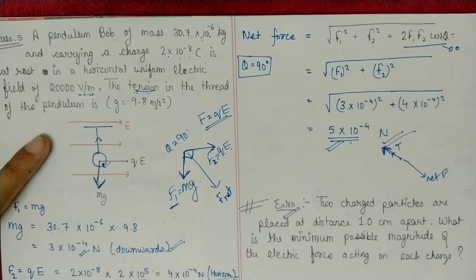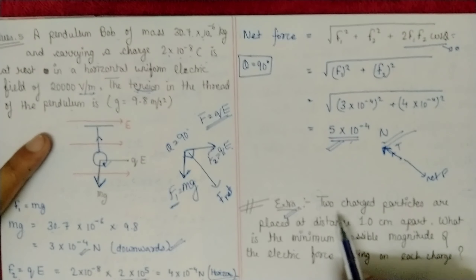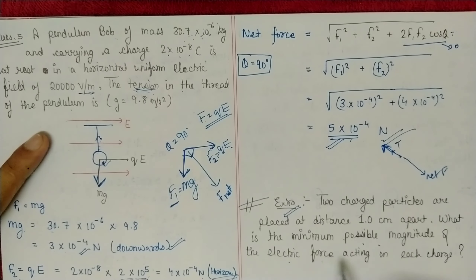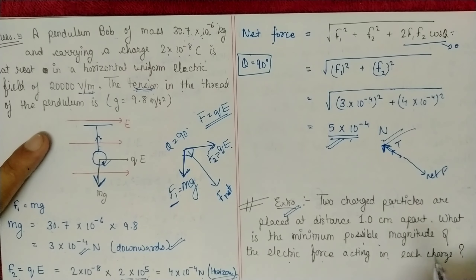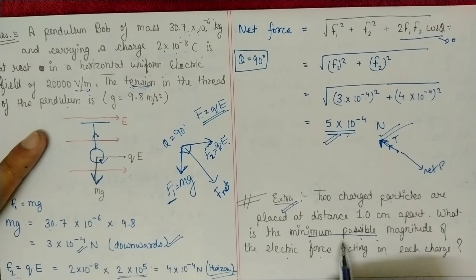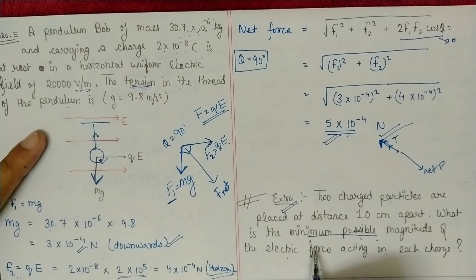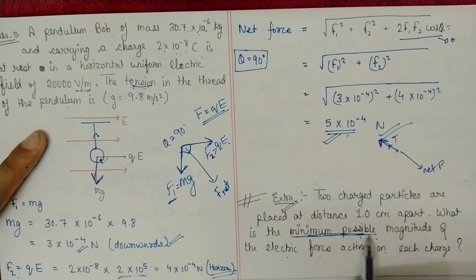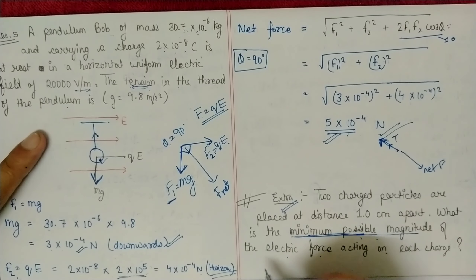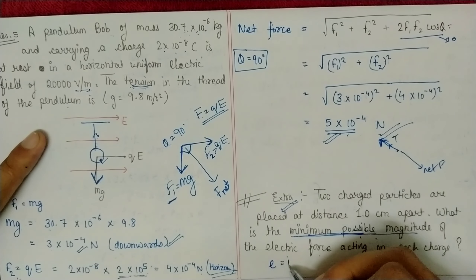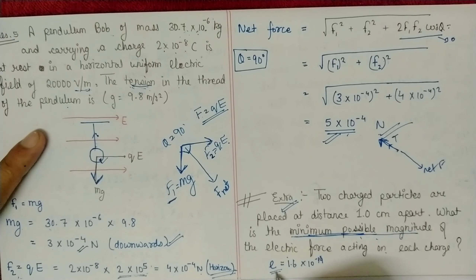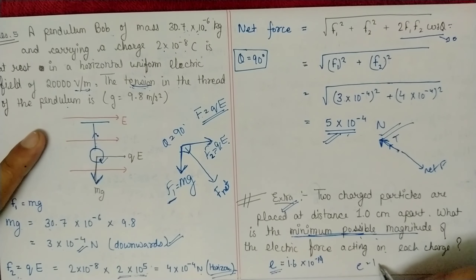Bonus question: Two charged particles are placed 1.0 cm apart. What is the minimum possible magnitude of the electric force acting on each charge? The minimum possible charge on any object is the charge of a single electron (1.6 × 10⁻¹⁹ C), as charge cannot be divided further — this is the smallest possible charge.